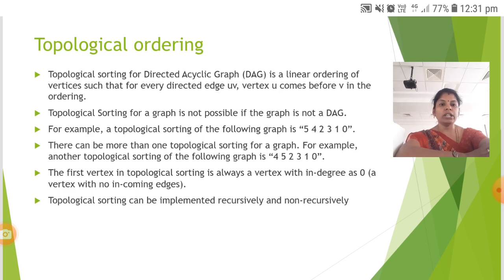There can be more than one topological sorting for a graph. For example, another topological sorting of the following graph is 4, 5, 2, 3, 1, 0.